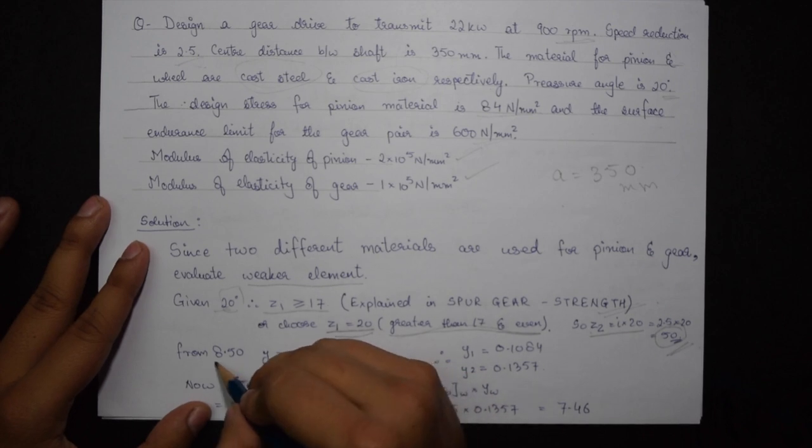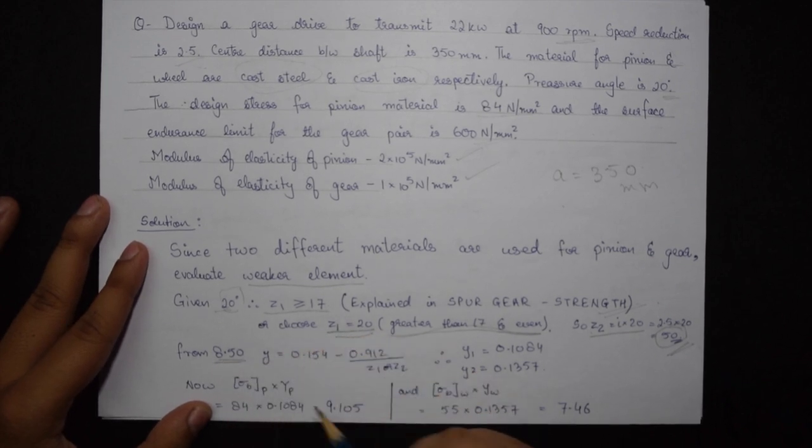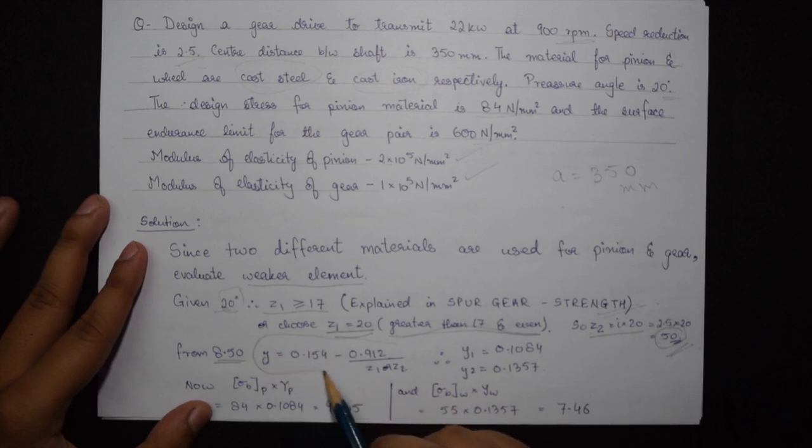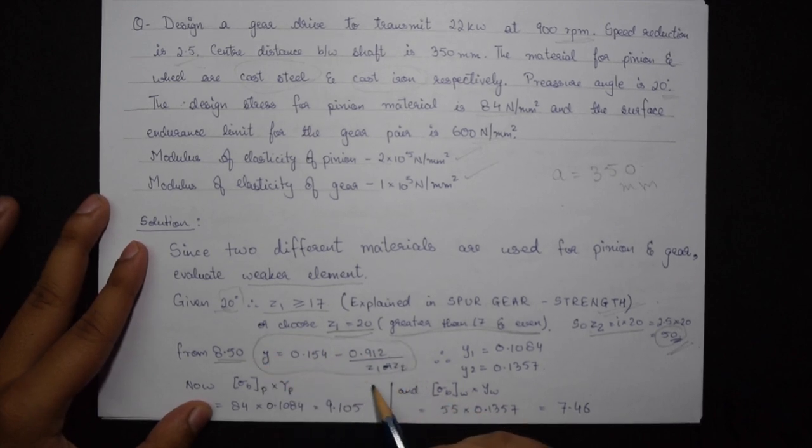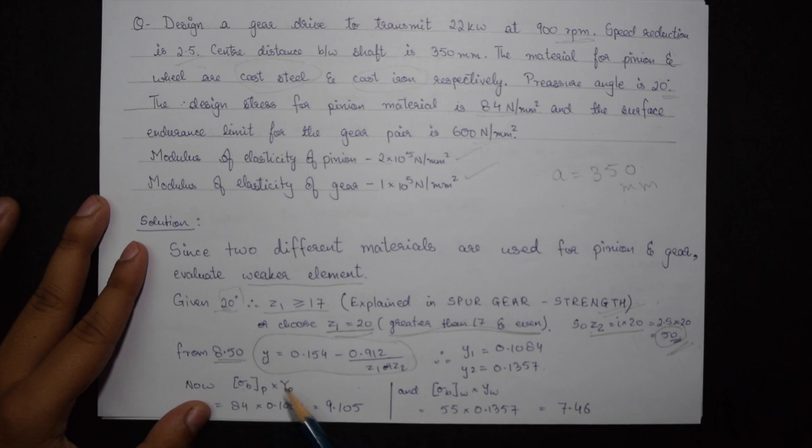From page 8.50 of the design data book compiled by PSG College of Technology, we see that the formula for Y is given. Now we will be comparing for pinion and wheel both sigma B into Y.